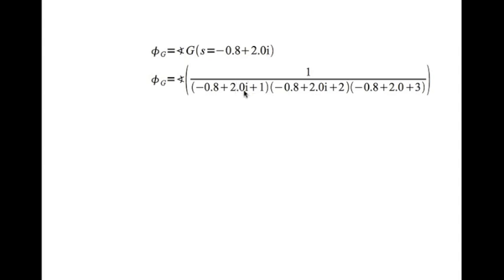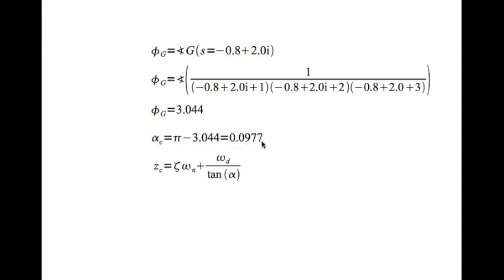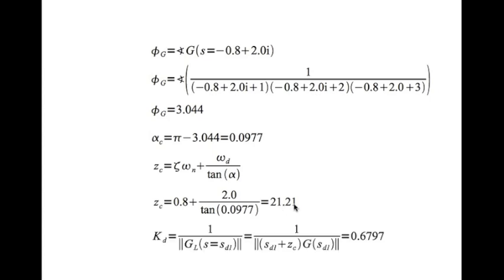We evaluate phi_g, the angle of G at s = -0.8 + 2i, where G = 1/[(s+1)(s+2)(s+3)]. Using MATLAB or a calculator, phi_g = 3.044 radians. Then alpha_c = pi - 3.044 = 0.0977 radians. So zc = 0.8 + 2.0/tan(0.0977) = 0.8 + 2.0/0.0977, giving zc approximately 21.21.